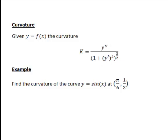Let's have a look at an example: finding the curvature of the curve y equals sin x at the point (π/6, 1/2). The interpretation of curvature is that it is a rate of change of the direction of the curve with respect to arc length.